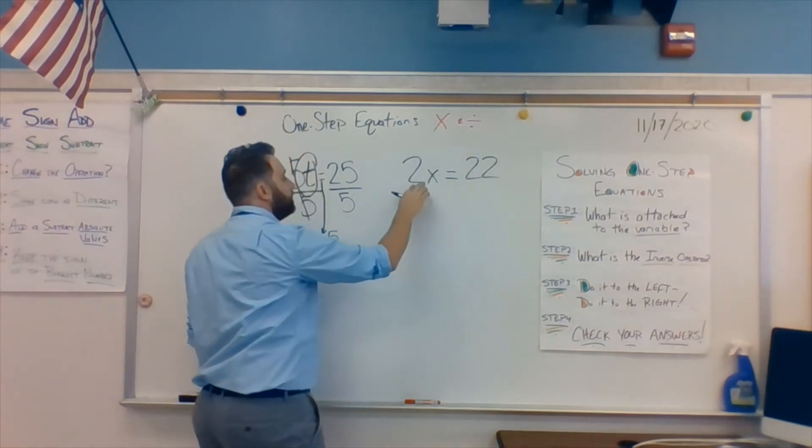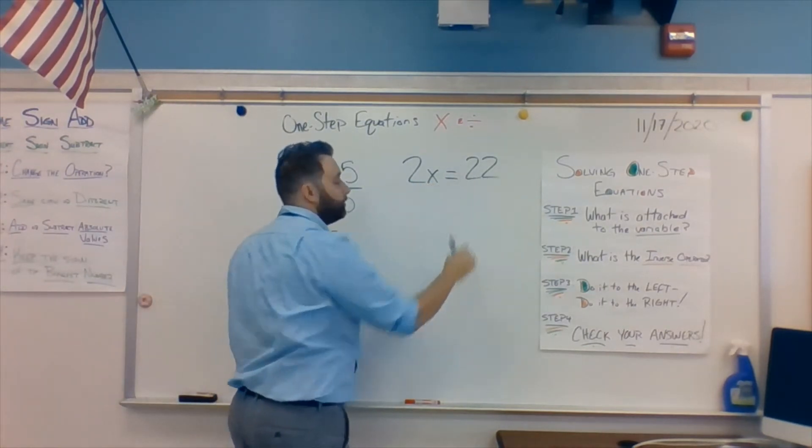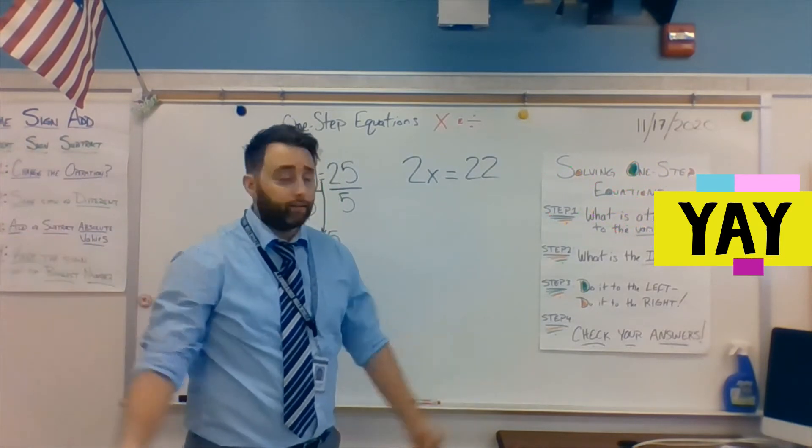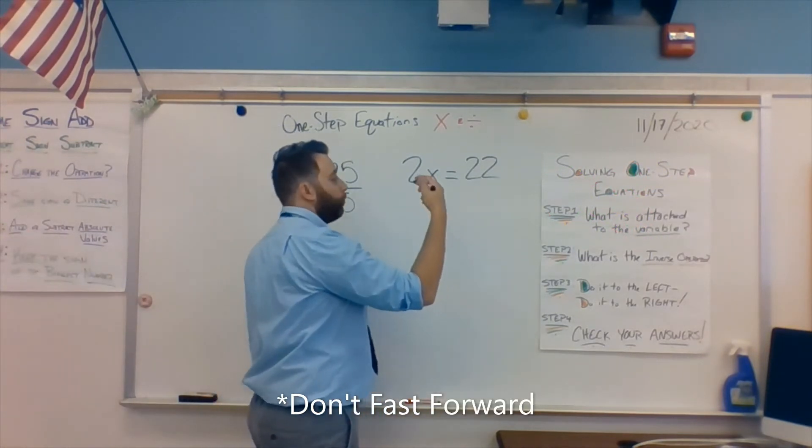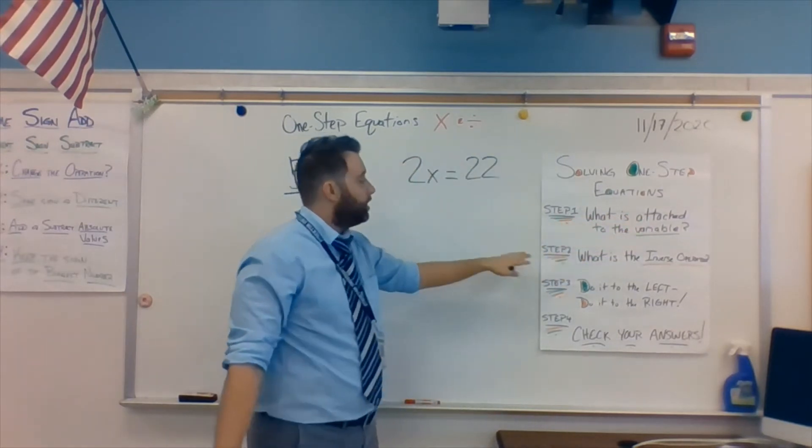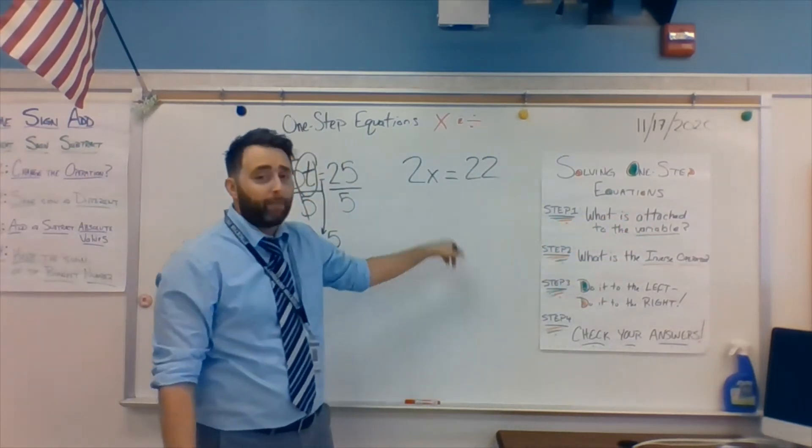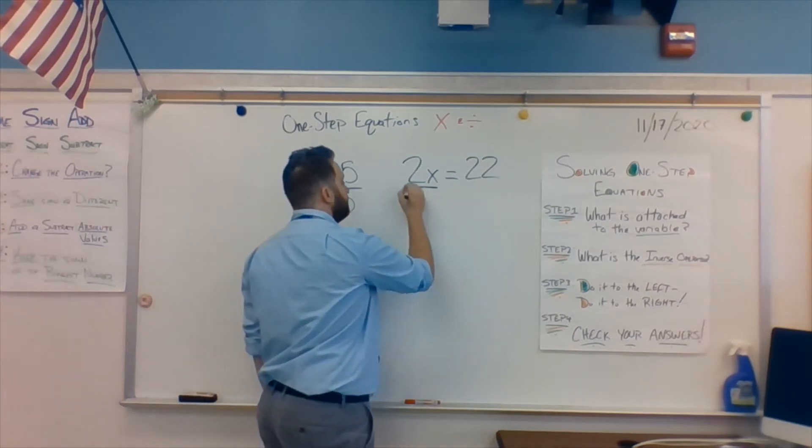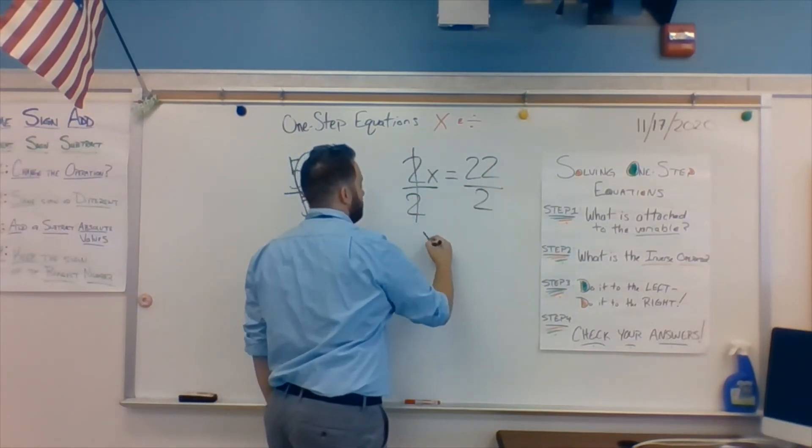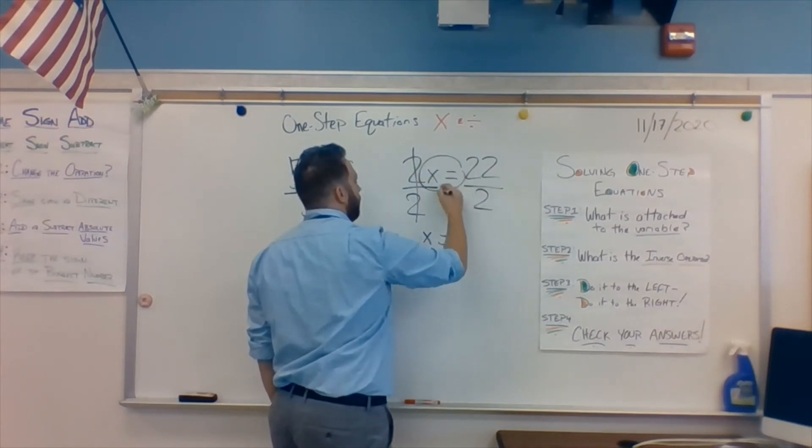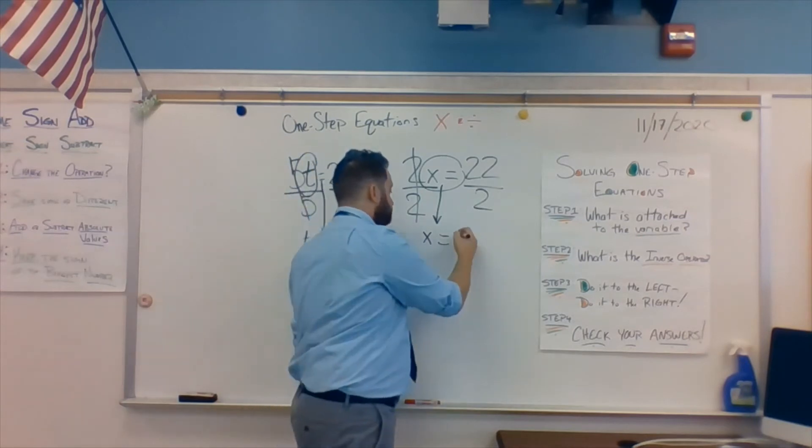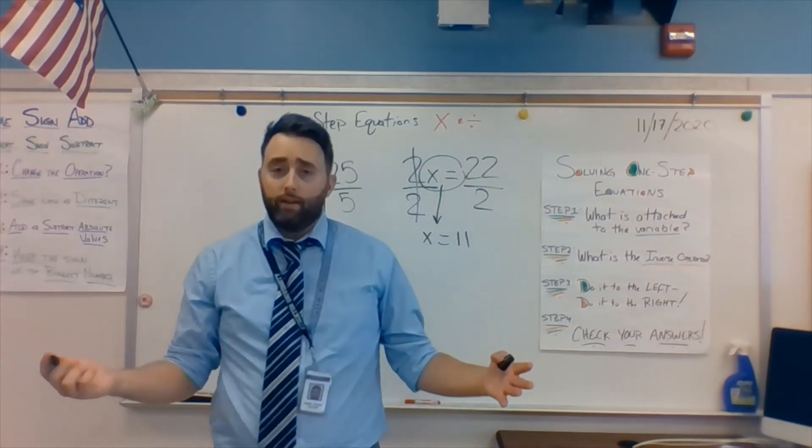Second example. 2. Multiplied by what? Equals 22. You know the answer already. Good. Fast forward. I don't want to tell you. Okay? What, what is stuck to the variable? The 2. What is the inverse operation of multiplying by 2? Dividing by 2. Do it to the left. Do it to the right. Bring this whole thing down. 22 divided by 2 is? 11. X equals 11.